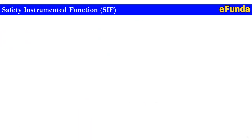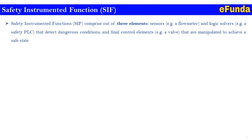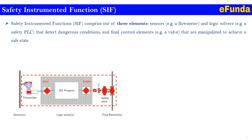Safety Instrumented Function (SIF): an SIS comprises three elements — a sensor (e.g., a flow meter), a logic solver (e.g., a safety PLC) that detects a dangerous condition, and a final control element (e.g., a valve) that is manipulated to achieve a safe state. In the first diagram, transmitters are connected as inputs to the SIS program acting as a logic solver, whose output drives the final elements such as valves.